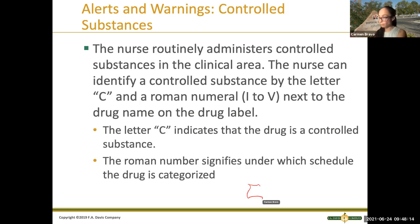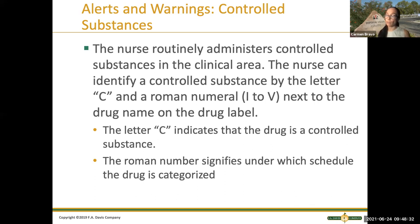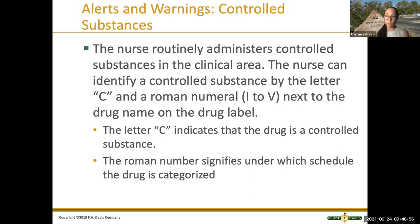Also, by looking at a drug label, you can see if the medication is a controlled substance. The Roman numeral numbers you see inside the 'C' symbol indicate how high the risk is of the medication becoming dependent — that is, how likely the person can become addicted. The lower the number, the higher the control substance level.